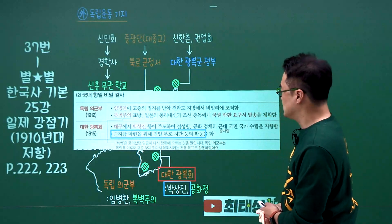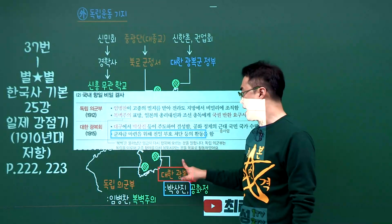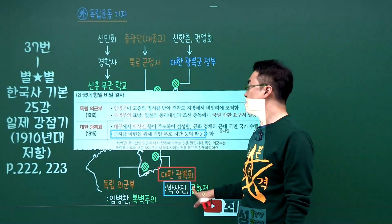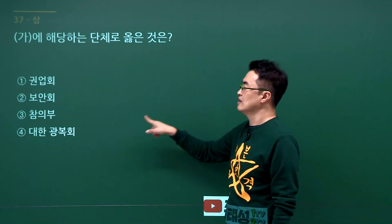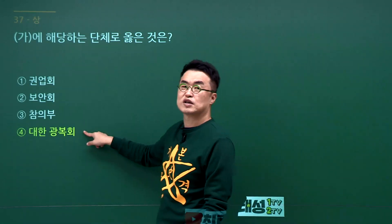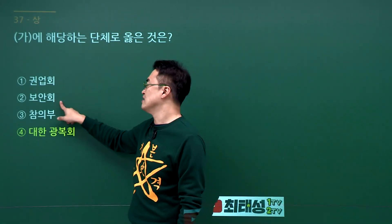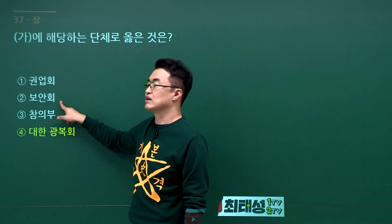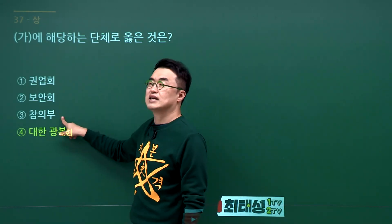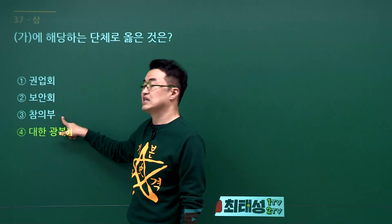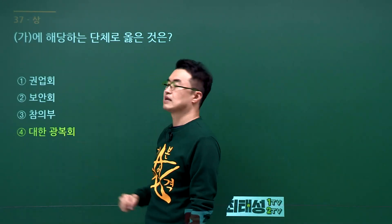대한광복회 문제입니다. 박상진 하면 대한광복회가 딱 붙어야 합니다. 문제에서 박상진이 등장했으니 대한광복회를 고르시면 됩니다. 권업회는 연해주에 있었고, 보안회는 황무지개간 반대운동을 담당한 애국계몽운동 단체이고, 참의부는 1920년대 만주에서 활약했던 조직입니다. 정답은 4번입니다.